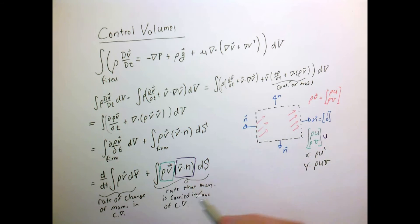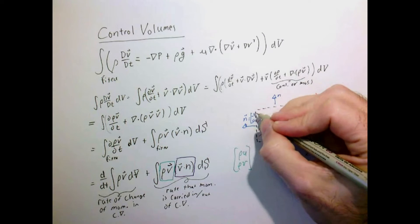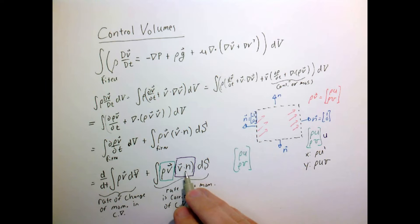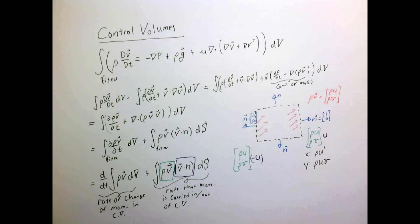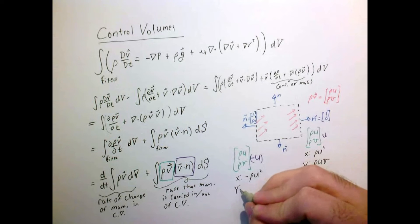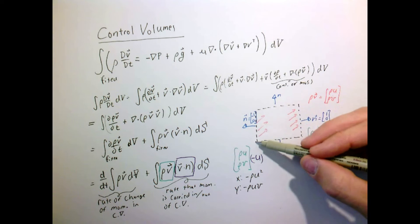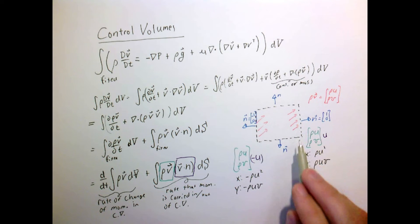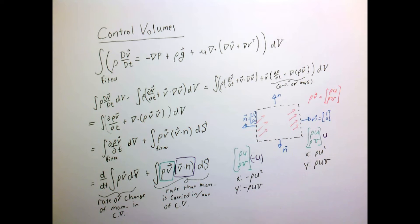On the left boundary, the momentum term rho·v is the same, but the normal vector is (-1, 0). So when we take v·n, the velocity and normal vectors are not aligned, giving us minus u. That means the x-component of momentum flux on this boundary is minus rho·u² and the y-component is minus rho·u·v. So if the velocity field is constant along both sides and the same on left and right, what comes in on the left exactly balances what goes out on the right, and the net change on those two surfaces is zero.